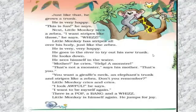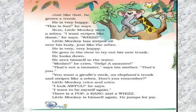His mother said: 'It's not a monster — yeh toh tu hi hai!' She reminded him: tujhe elephant jaisi trunk chahiye thi, phir zebra jaise stripes chahiye the — do you remember? So the little monkey cries and says: 'I want myself again!' — mujhe main jaisa tha waisa hi chahiye. And once again with the magic stick he became himself. So the moral of this lesson is: we should be happy with what we have — hamein apne paas jo hai usse hi khush rehna chahiye.